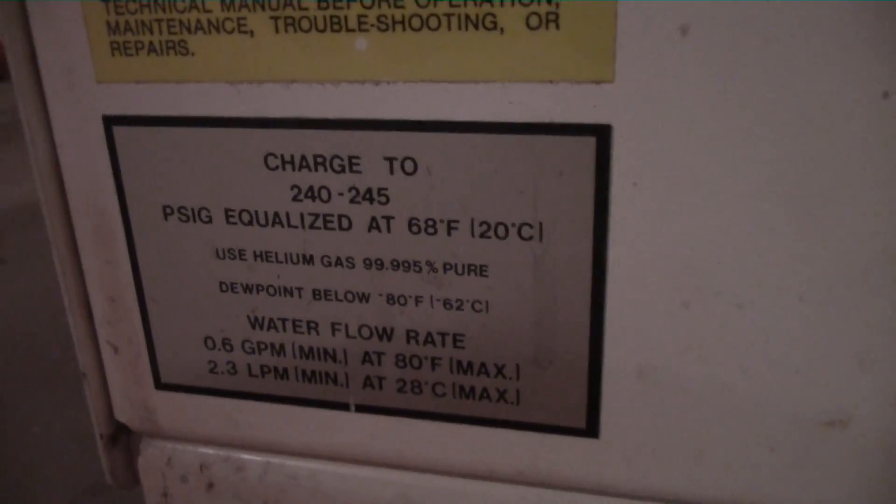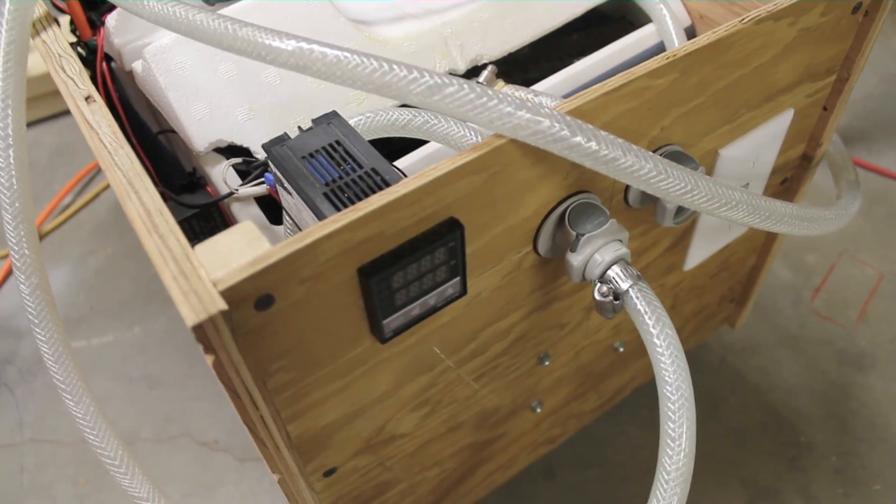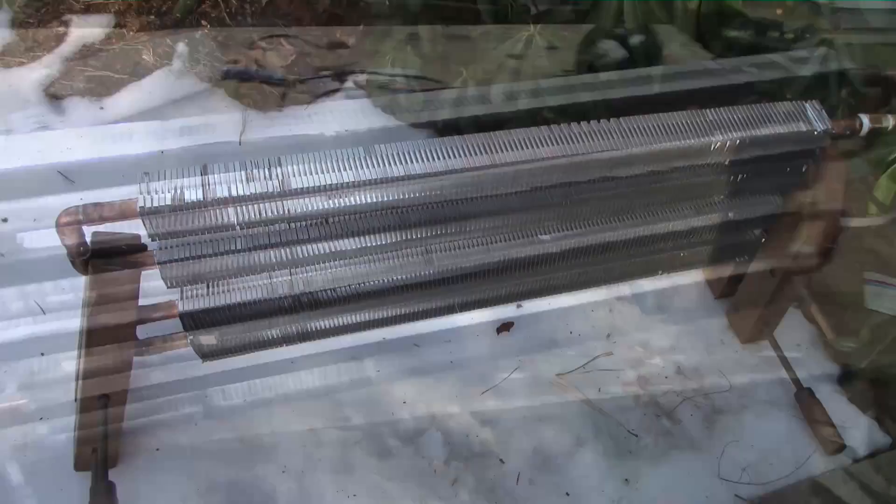The compressor also needs a flow of chilled water to keep from overheating. I used my homemade water chiller. This was only designed for diffusion pumps, so I found some hydronic heater pipes and sweated them together to make a radiator.